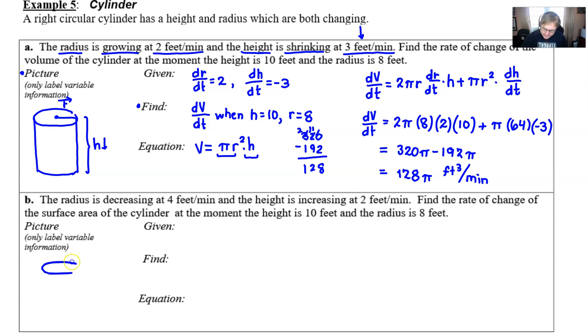Again, you can draw the picture, but it's probably not going to change a whole heck of a lot. It's still a cylinder, it still has a height. The only thing now is that this height is increasing, and the radius r is actually going to decrease, so I'm going to send it the other direction.